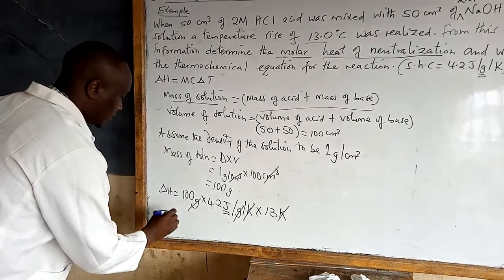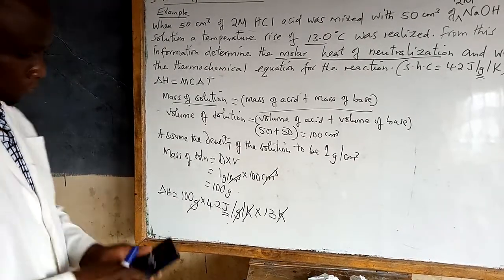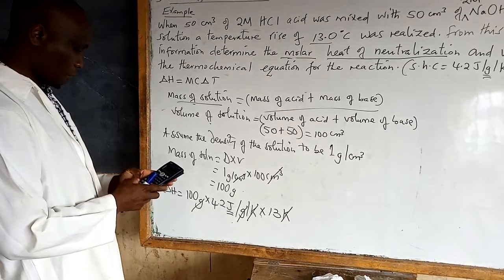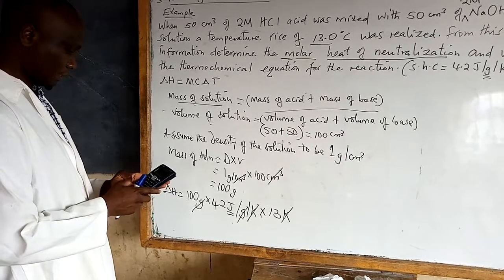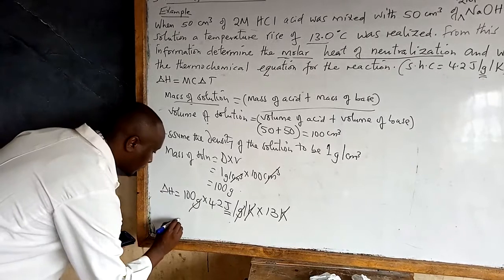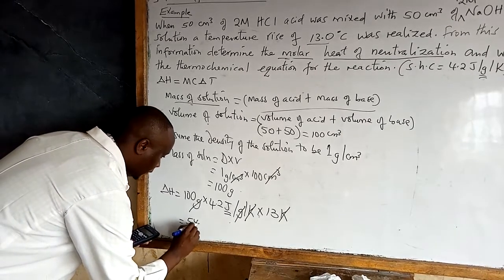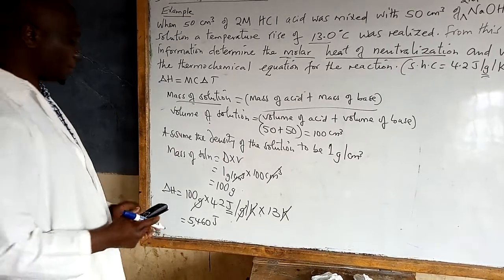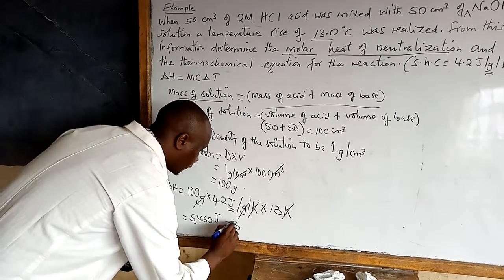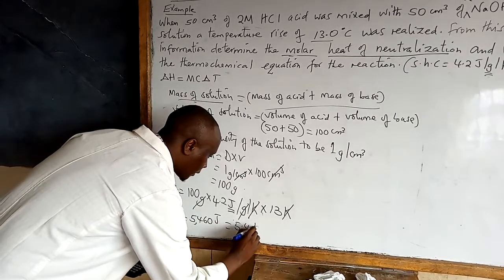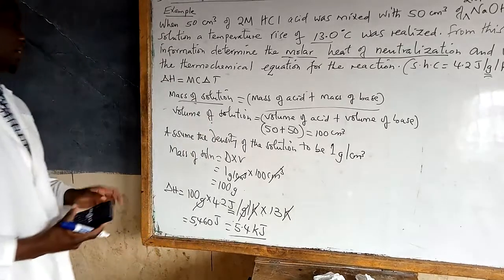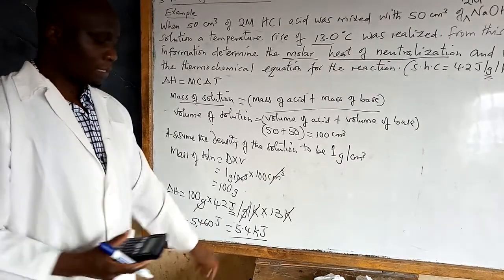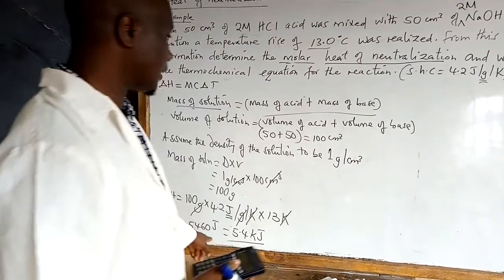Working it out: 100 × 4.2 × 13 gives us 5460 joules. Dividing by 1000, this is equivalent to 5.46 kilojoules, since 1000 joules equals 1 kilojoule. So that is the heat change.